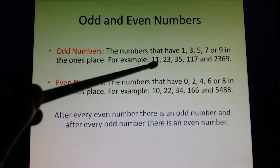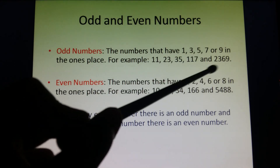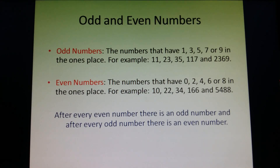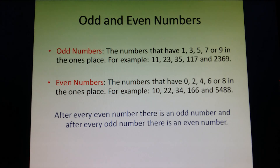As you can see, in the ones place we have 1, 3, 5, 7, and 9. So odd numbers are those numbers that have 1, 3, 5, 7, or 9 in the ones place. Next are even numbers. Even numbers that have 0, 2, 4, 6, or 8 in the ones place are even numbers, and they are a perfect pair of 2.